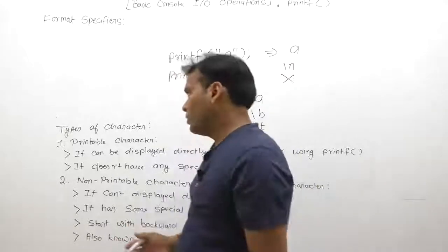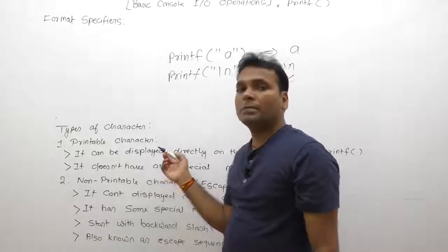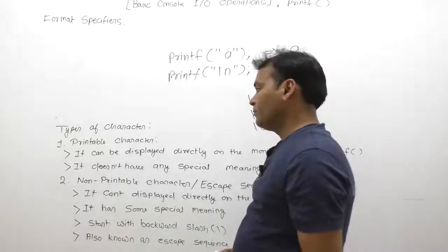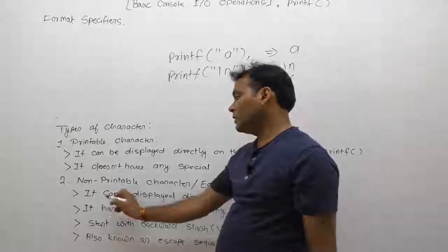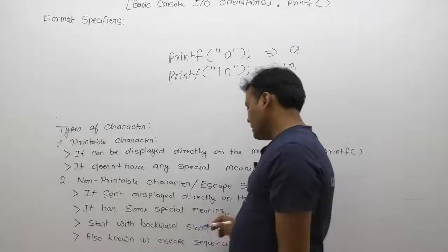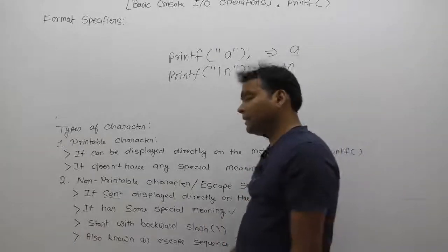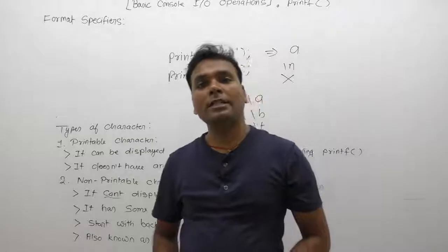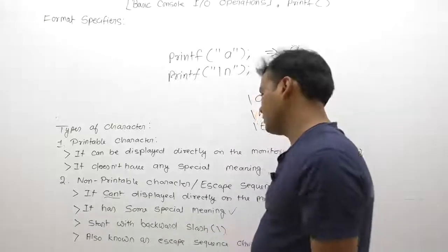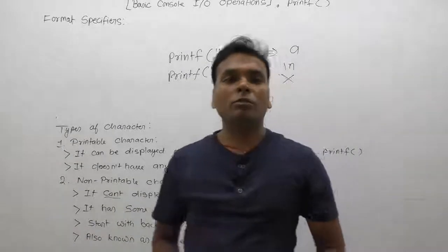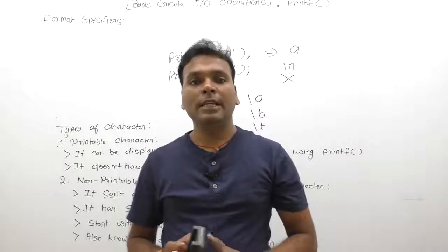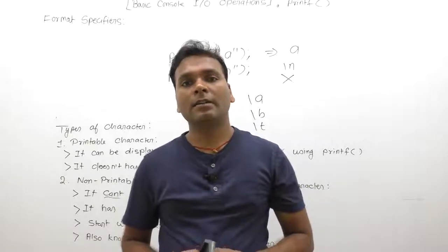To summarize: printable characters can be displayed directly on the monitor and do not have any special meaning. Non-printable characters cannot be displayed directly on the monitor, have special meanings, and always start with a backward slash. Because they always start with a backward slash, they are also known as escape sequence characters in C. We will discuss escape sequence characters in detail in the next video.